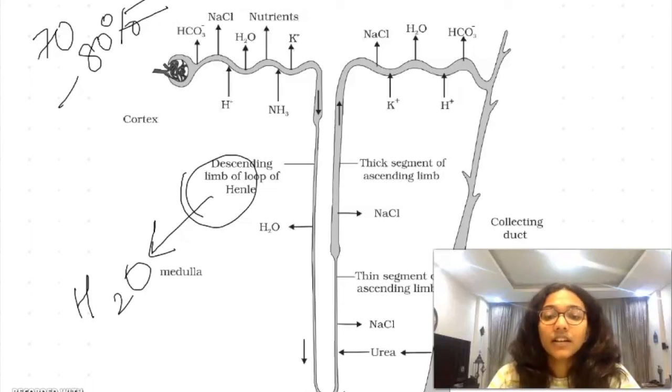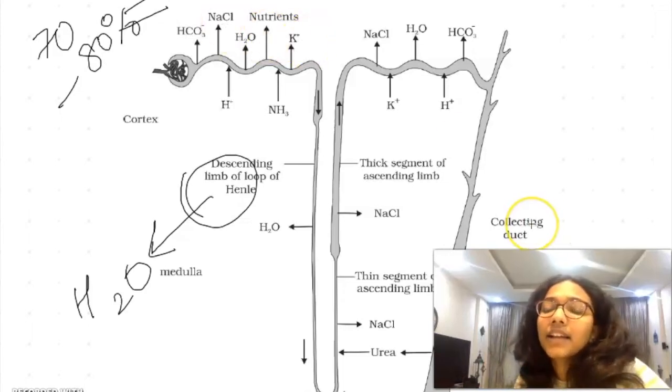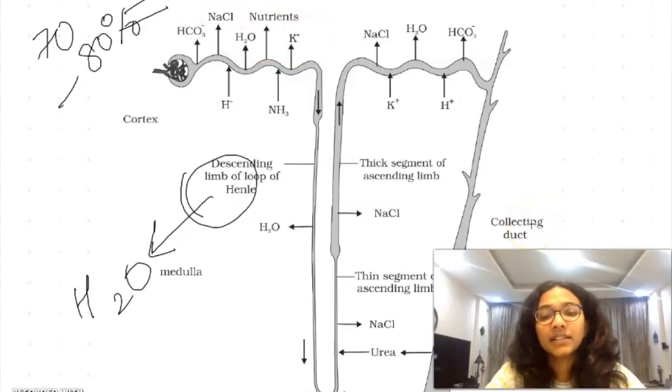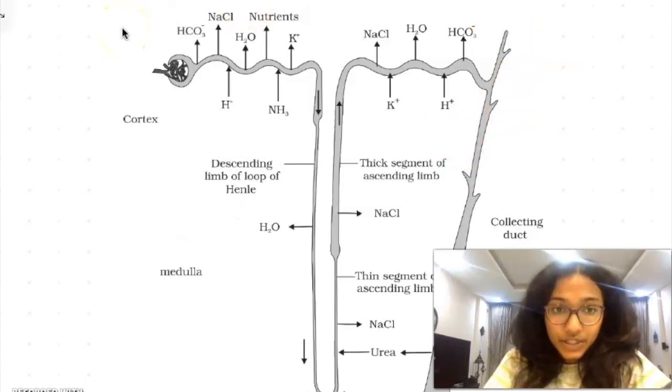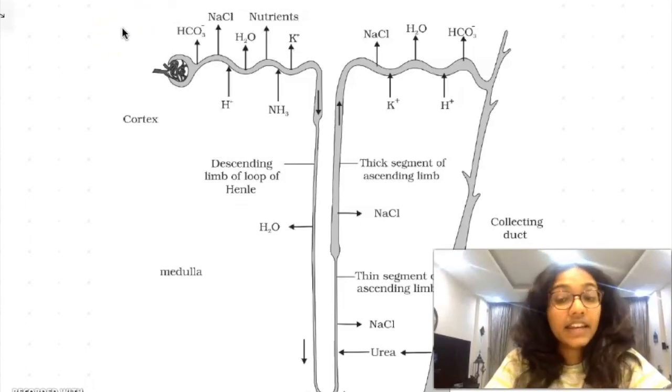Now let's come to distal convoluted tubule. From distal convoluted tubule, mostly sodium ions are reabsorbed into the blood, and a bit of water is reabsorbed. It goes to collecting duct and from collecting duct, major thing that is reabsorbed is water, so urine becomes almost four times concentrated than it actually was.